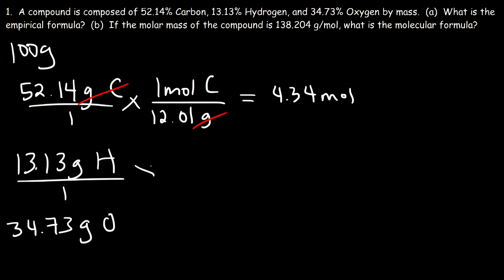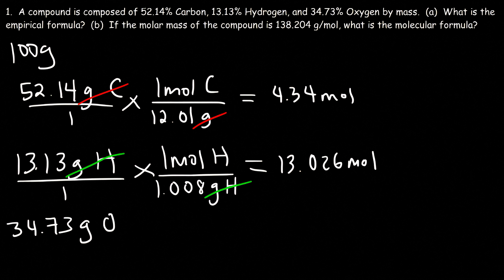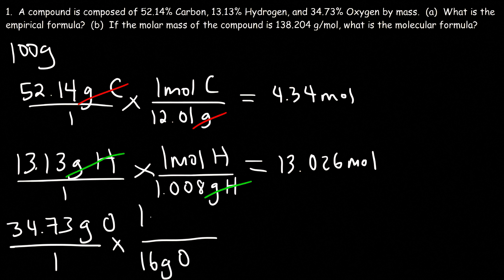Now let's do the same thing for hydrogen. The molar mass of hydrogen is 1.008 grams per mole. So let's take 13.13 and divide it by 1.008 — this gives us 13.026 moles of hydrogen. Lastly, we have oxygen. The molar mass is 16 grams per mole. So 34.73 divided by 16 gives us 2.171 moles of oxygen.